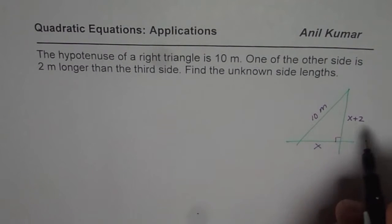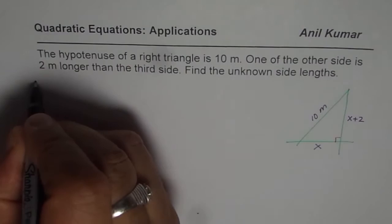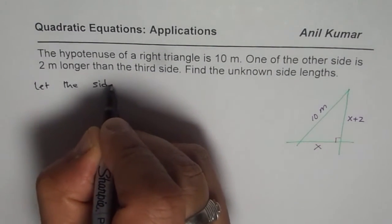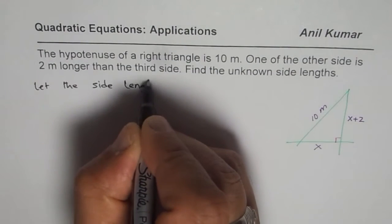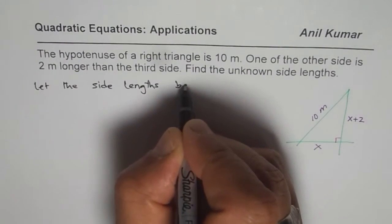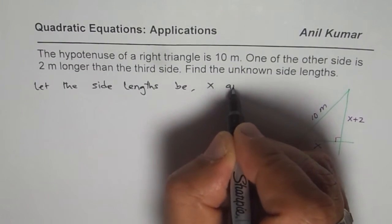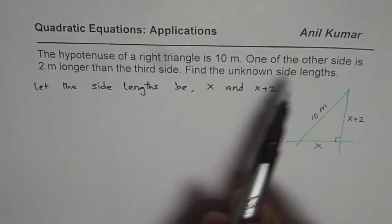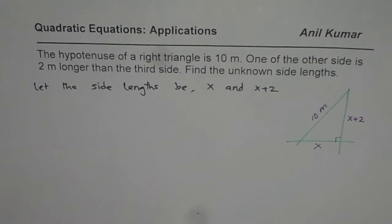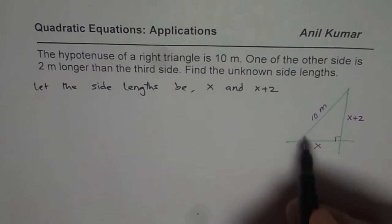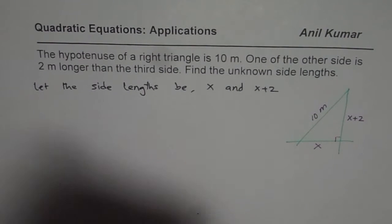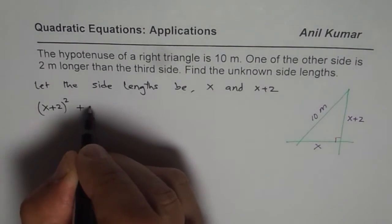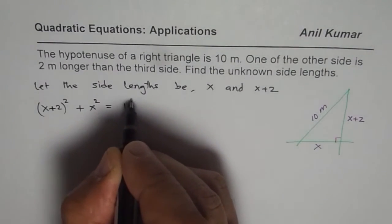Let the side lengths be x and x plus 2, since one of the sides is 2 meters longer. Now we can relate them with the help of the Pythagorean theorem. So we have: (x + 2)² + x² = 10².